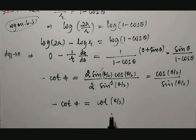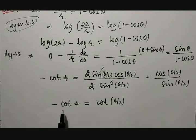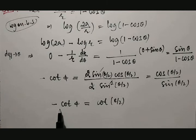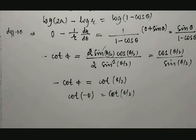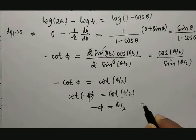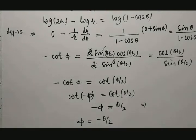One thing we need to observe here: since there is a minus sign, we cannot directly say cot cancels. We note that cot(−θ/2) = cos(−θ/2)/sin(−θ/2) = cos(θ/2)/(−sin(θ/2)) = −cot(θ/2). Therefore, cot(−θ/2) = cot(θ/2) leads us to conclude that −ψ = θ/2, or equivalently ψ = −θ/2.